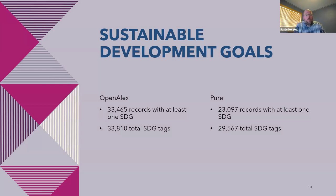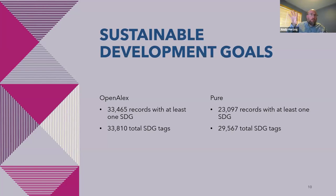The last comparison was sustainable development goals. Research outputs can be classified among 18 different sustainable development goals, and I compared how that appeared in OpenAlex versus Pure. OpenAlex was tagging more content with SDGs than Pure by about 10,000 records, though the total number of tags was closer between the two. The system built into Pure was tagging outputs with more tags per output, while OpenAlex was tagging more records but with fewer tags each. I'm not saying either was more correct — I was just seeing what data existed in both systems.